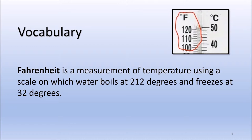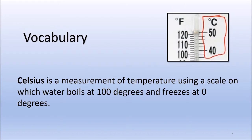Temperature can be measured in Fahrenheit. Fahrenheit is a measurement of temperature using a scale on which water boils at 212 degrees and freezes at 32 degrees. Temperature can also be measured in Celsius. Celsius is a measurement of temperature using a scale on which water boils at 100 degrees and freezes at 0 degrees. Most scientists use Celsius when they measure temperature.